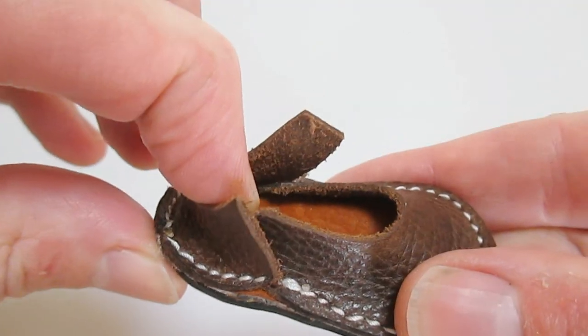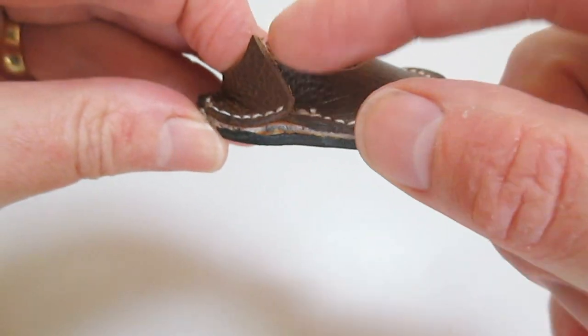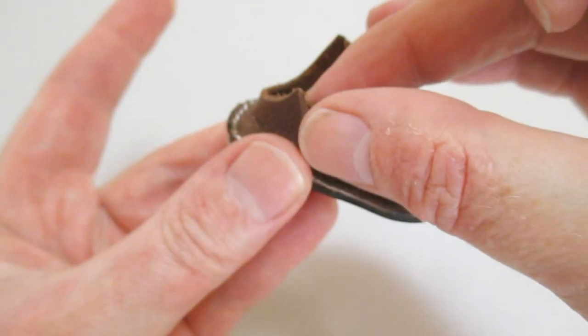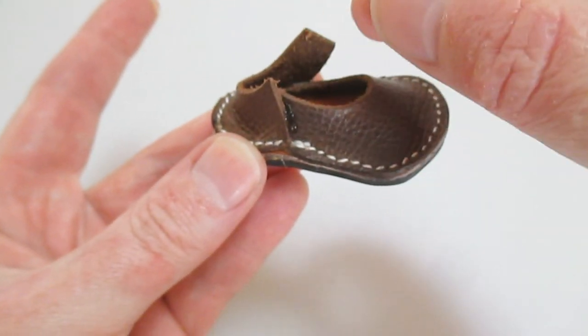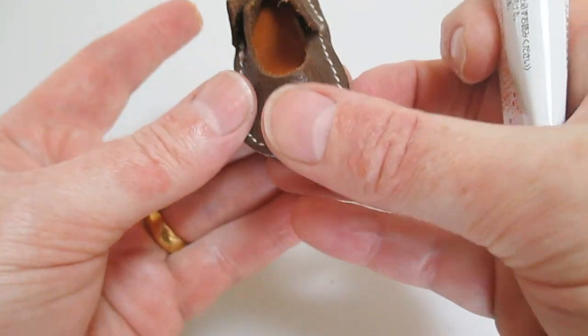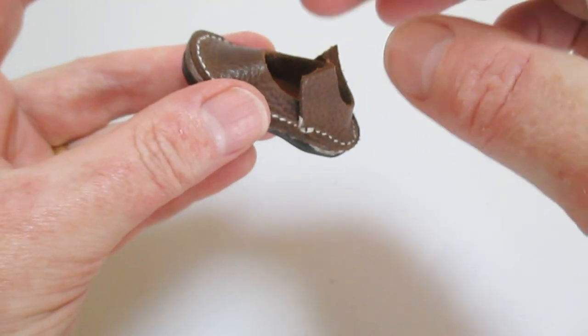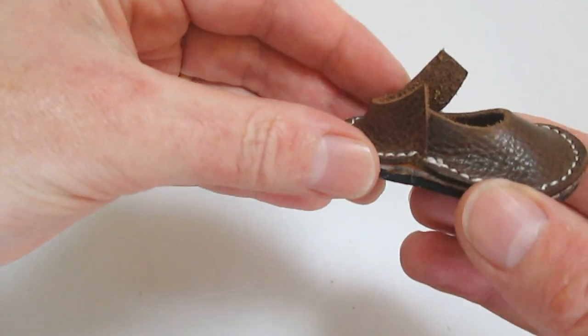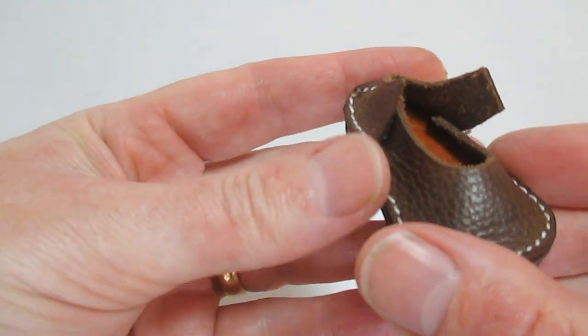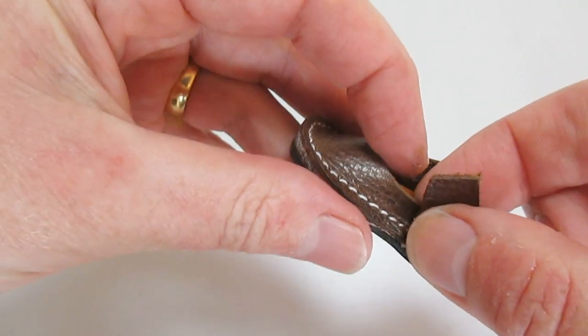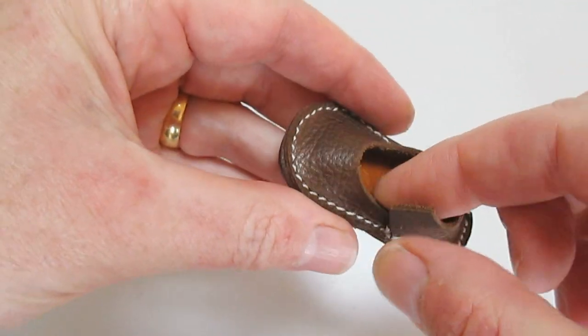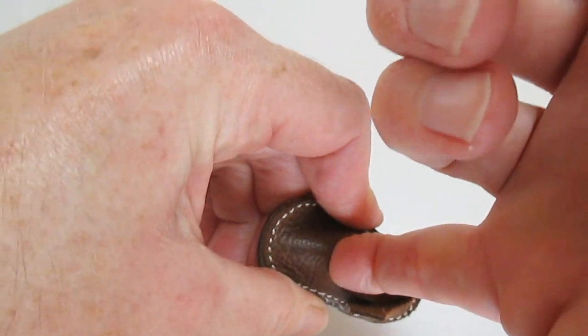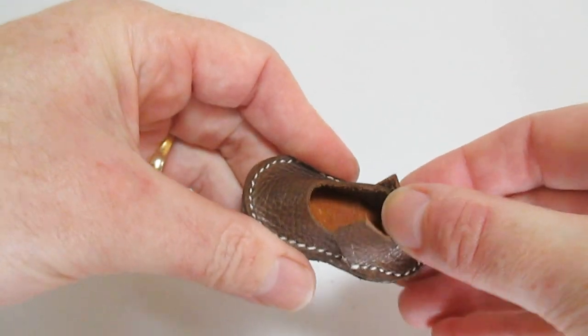So again, stretching the back piece so that it's almost vertical, I'm adding a little bit of glue, contact cement, onto both sides. Gently stretching, just doing what I can to make it look more like a real shoe.